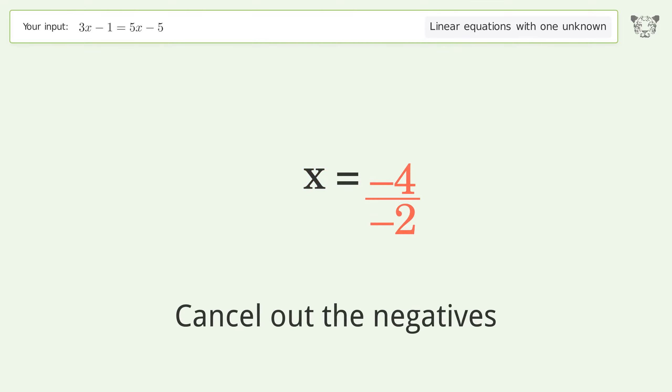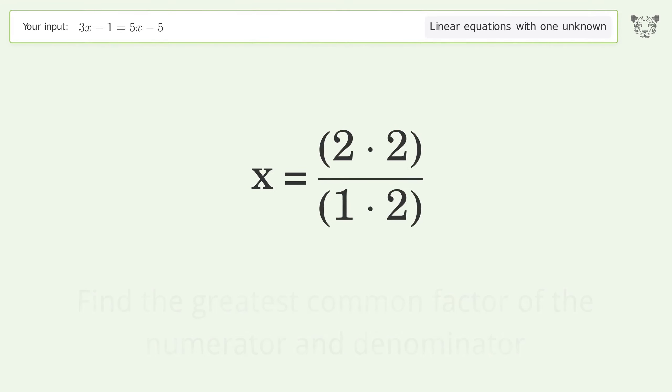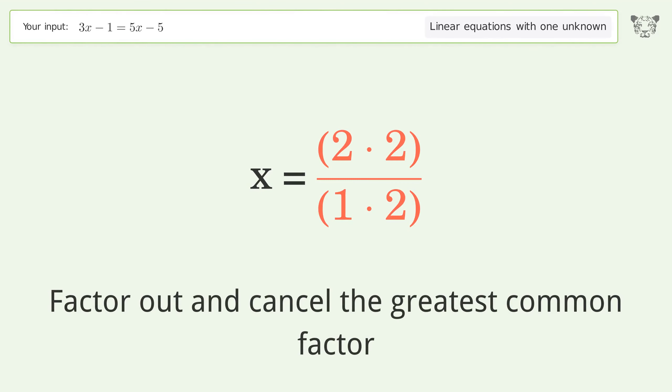Cancel out the negatives. Find the greatest common factor of the numerator and denominator. Factor out and cancel the greatest common factor.